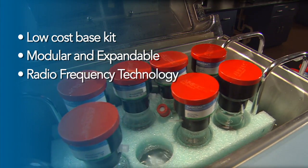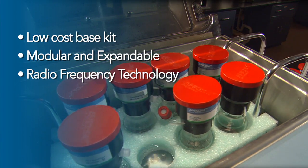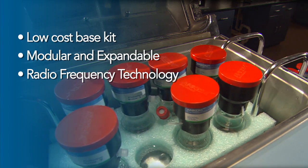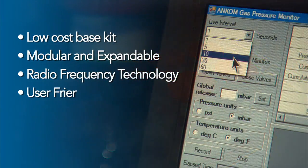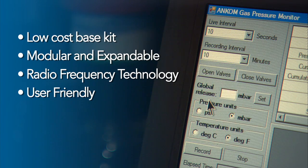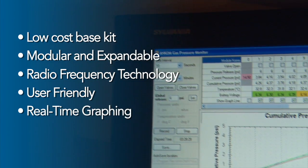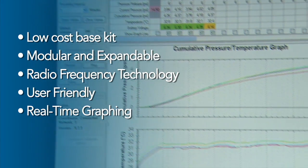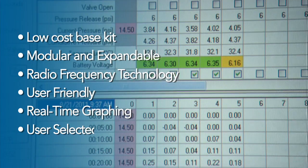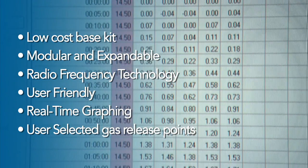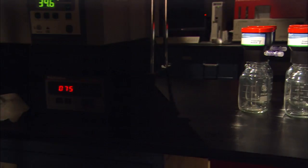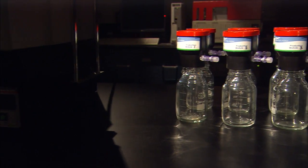The system uses wireless technology that allows modules to be placed anywhere within the radiofrequency range, freeing up valuable counter space for other uses. It includes user-friendly computer software that makes it simple to use the system and analyze the results. It provides real-time graphing of pressure and temperature curves to aid in monitoring kinetics at any point in time, and allows user-selected gas release points to control the amount of pressure that builds up within an RF1 module.